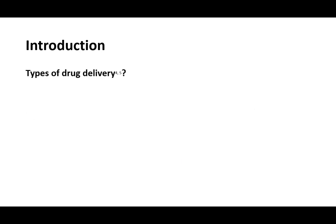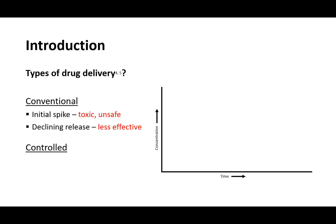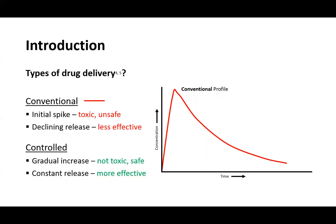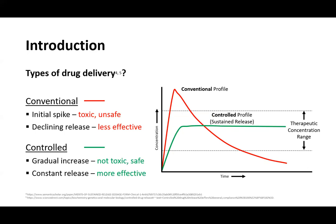Types of Drug Delivery: Conventional and Controlled. In conventional delivery, there's an initial spike with a declining release. This could be toxic or unsafe for patients. In controlled drug release, there's a gradual increase with a constant release. This is safer and not toxic for patients.